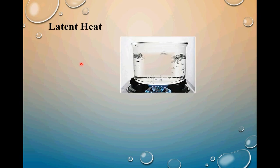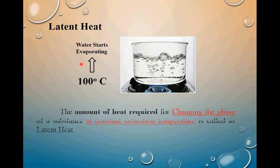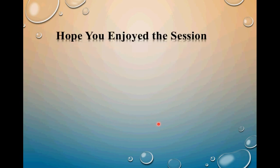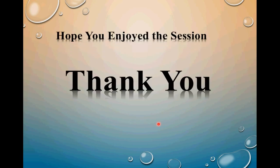Now, latent heat. In the same example, when 100 degree Celsius is reached and you continue heating, the water starts evaporating. The amount of heat required for changing the phase of a substance at constant saturation temperature is called latent heat — it is the heat associated with the phase change process, possible only at constant saturation temperature. So this was all about today's session. Hope you enjoyed it. Thank you for watching. Please like and subscribe to our channel.